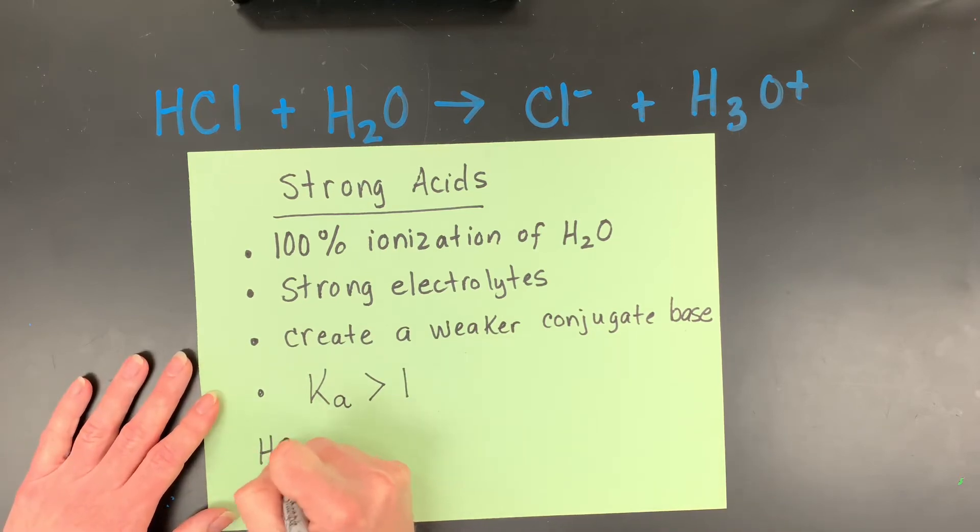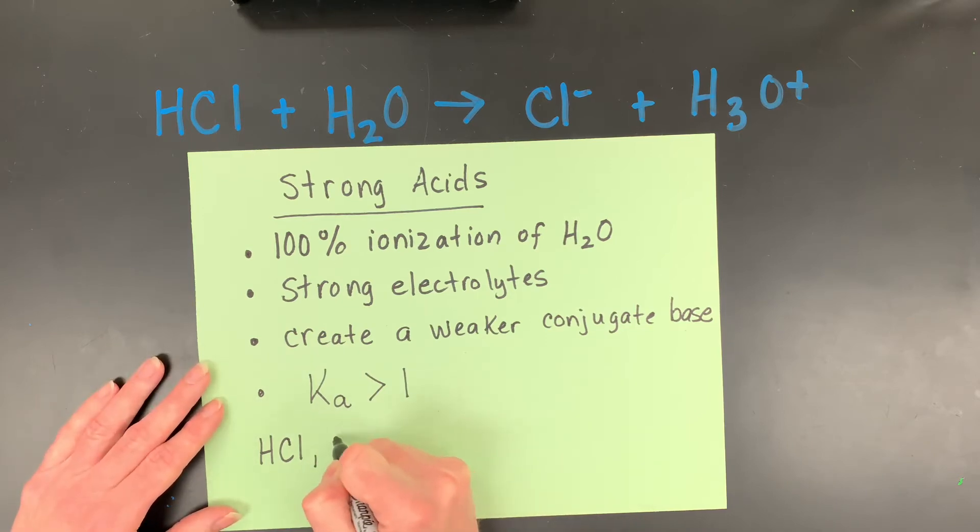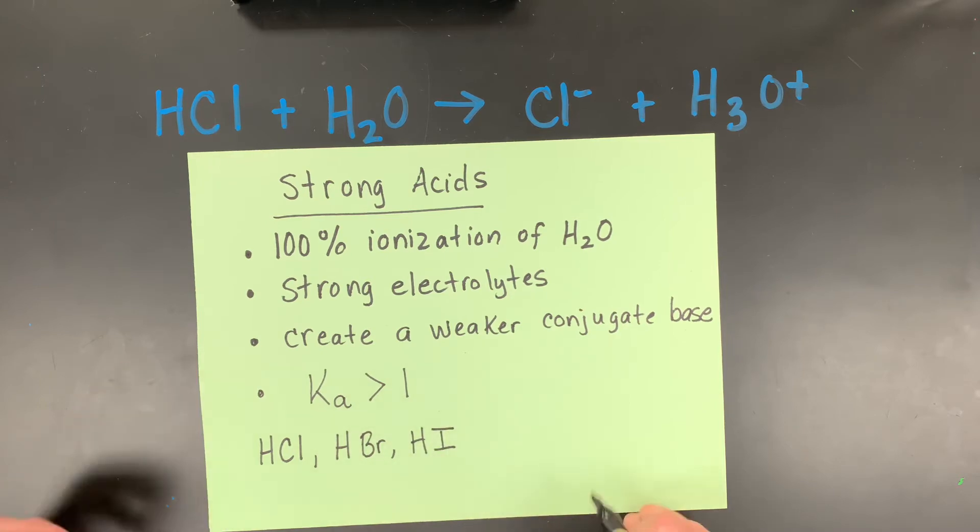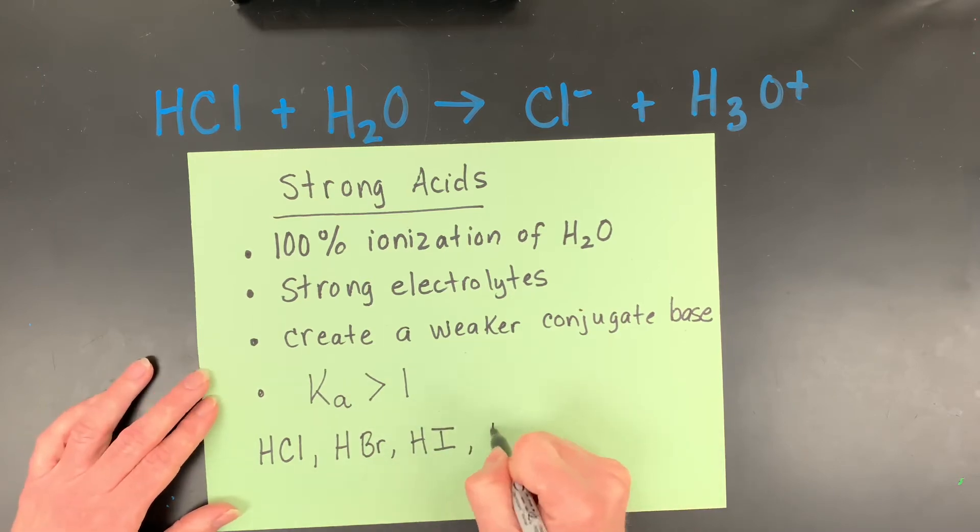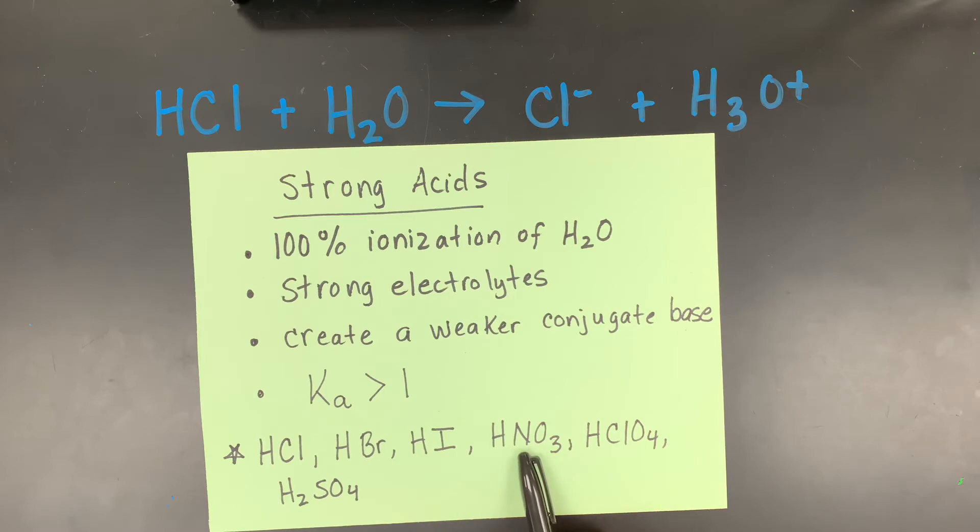So here are your strong acids. Most people agree there are six of them. So HCl, HBr, HI. Those are kind of from the halogens. And then nitric acid, which is HNO3. And perchloric acid, and one more that is diprotic, which is sulfuric acid. So there's your list of your most common six strong acids. Hydrochloric acid, hydrobromic acid, hydroiodic acid, nitric acid, perchloric acid, and sulfuric acid.